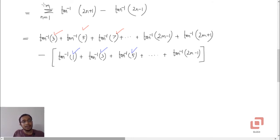But remember that we need to stop at m. So when you plug in the value which is one less than m, which is m minus 1, then this is going to give us tan inverse of 2m minus 1. And this has to be the last term of the second series: tan inverse of 2m minus 1.